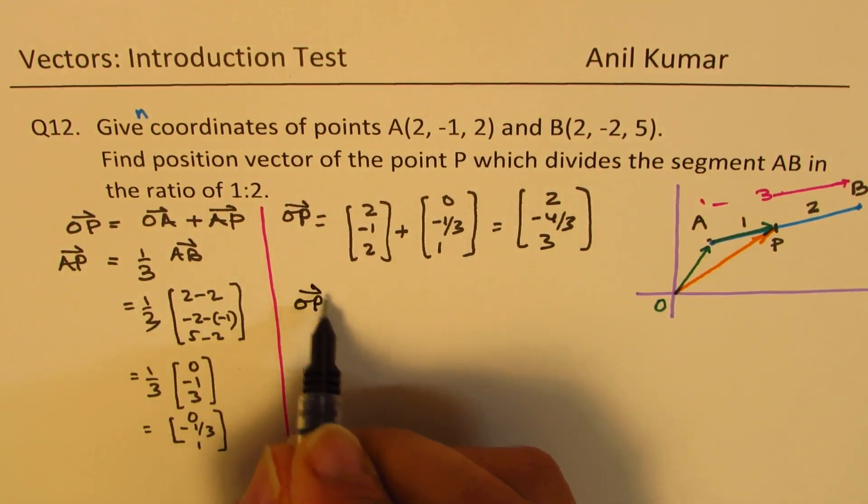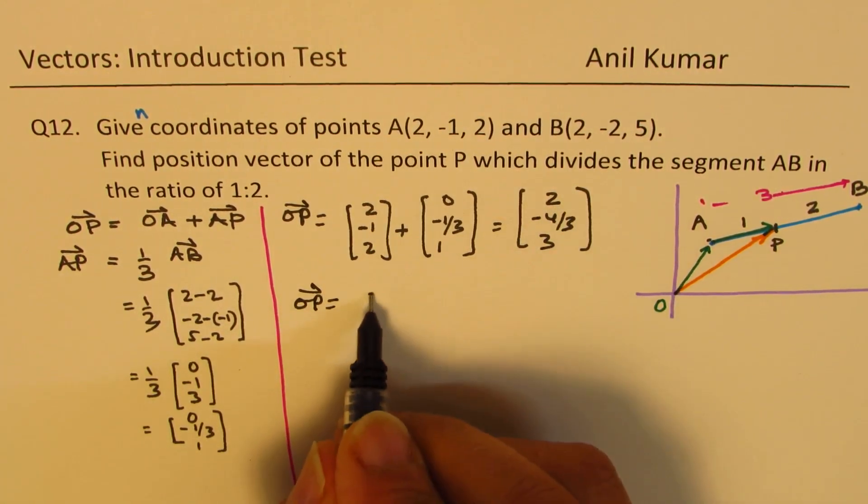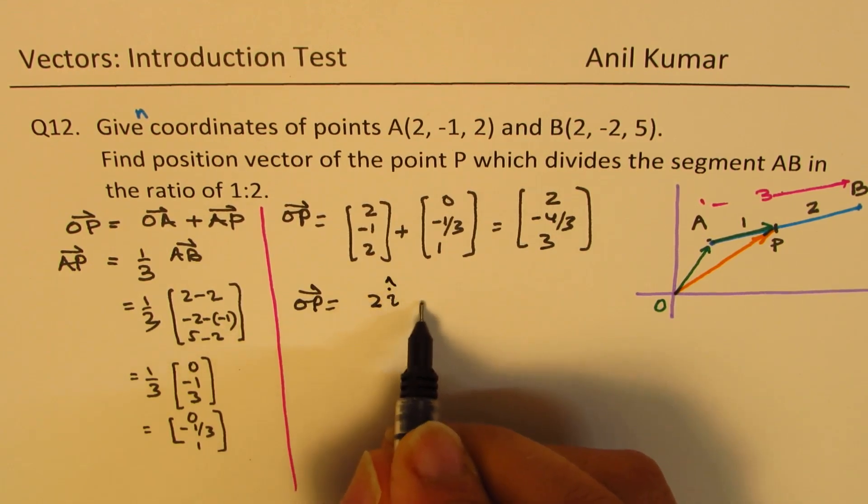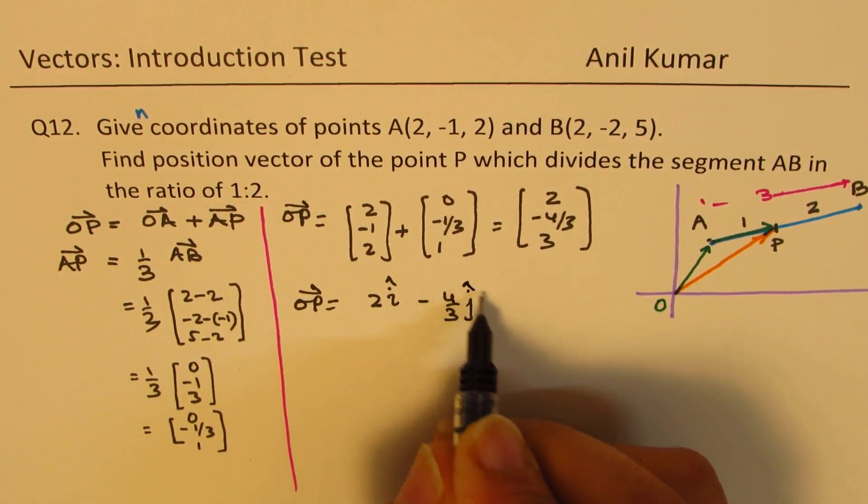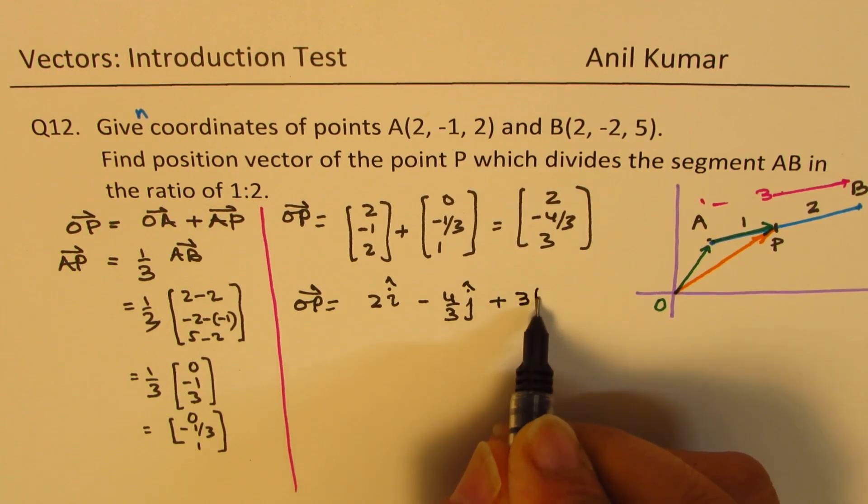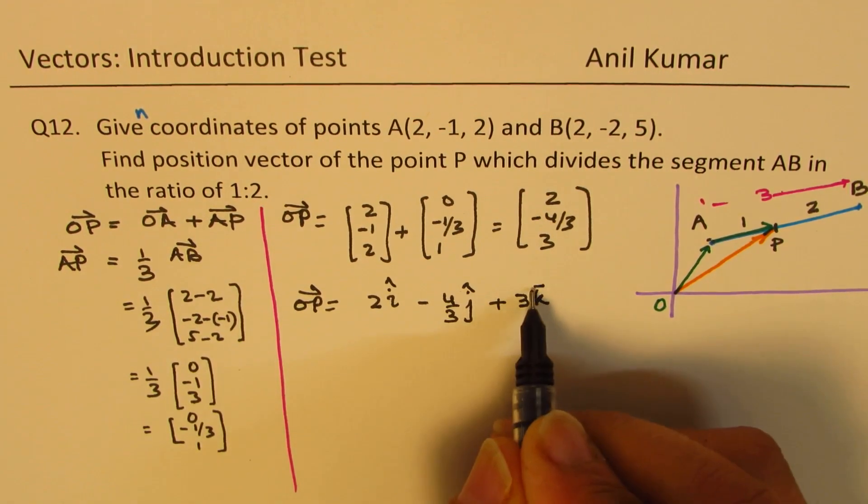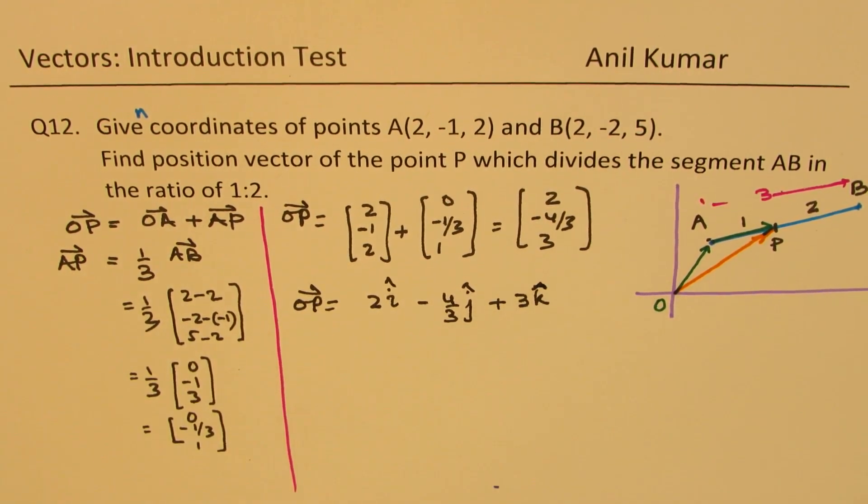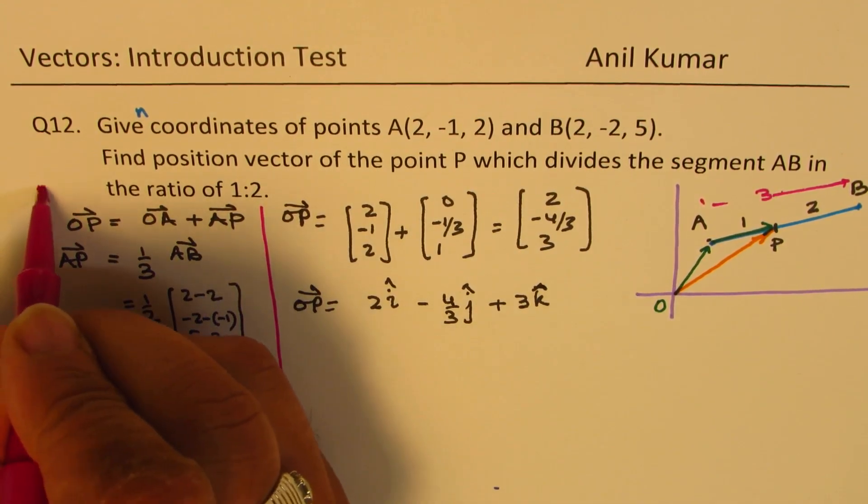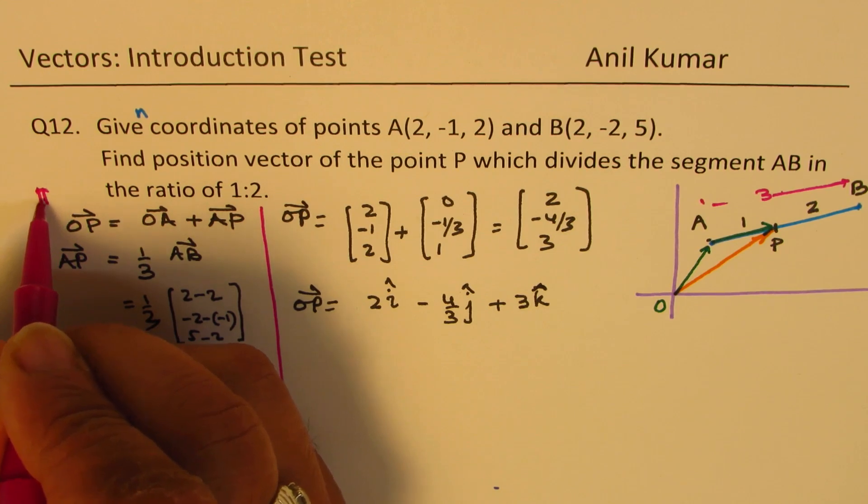OP is basically, you can write this also as 2i minus 4 over 3j plus 3k. These are unit vectors i, j, k. That is method 1.